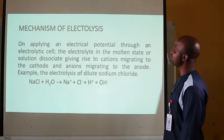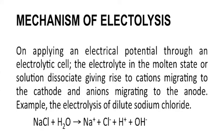The next aspect we will look at is the mechanism of electrolysis. On applying electric potential through an electrolytic cell, the electrolyte in the molten state or solution dissociates, giving rise to cations that are positively charged migrating towards the cathode, and anions that are negatively charged migrating towards the anode. For example, in the electrolysis of dilute sodium chloride: sodium chloride in solid state cannot conduct electricity because there are no mobile ions. Adding water and making it into solution causes dissociation into sodium ions, chloride ions, hydrogen ions, and hydroxyl ions.